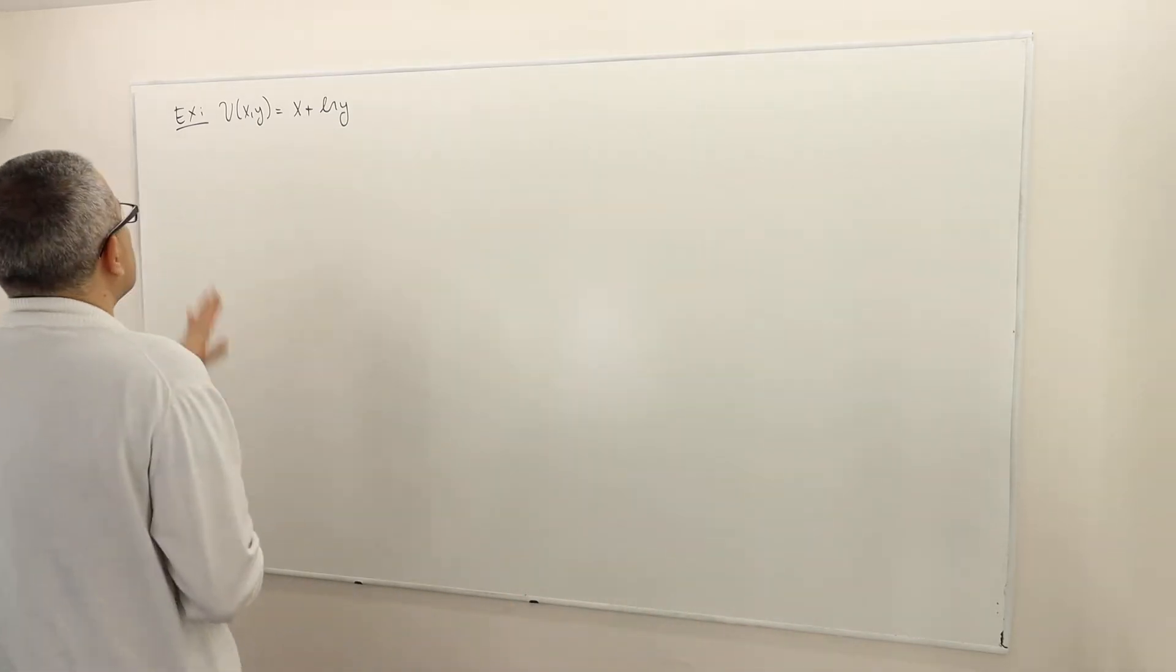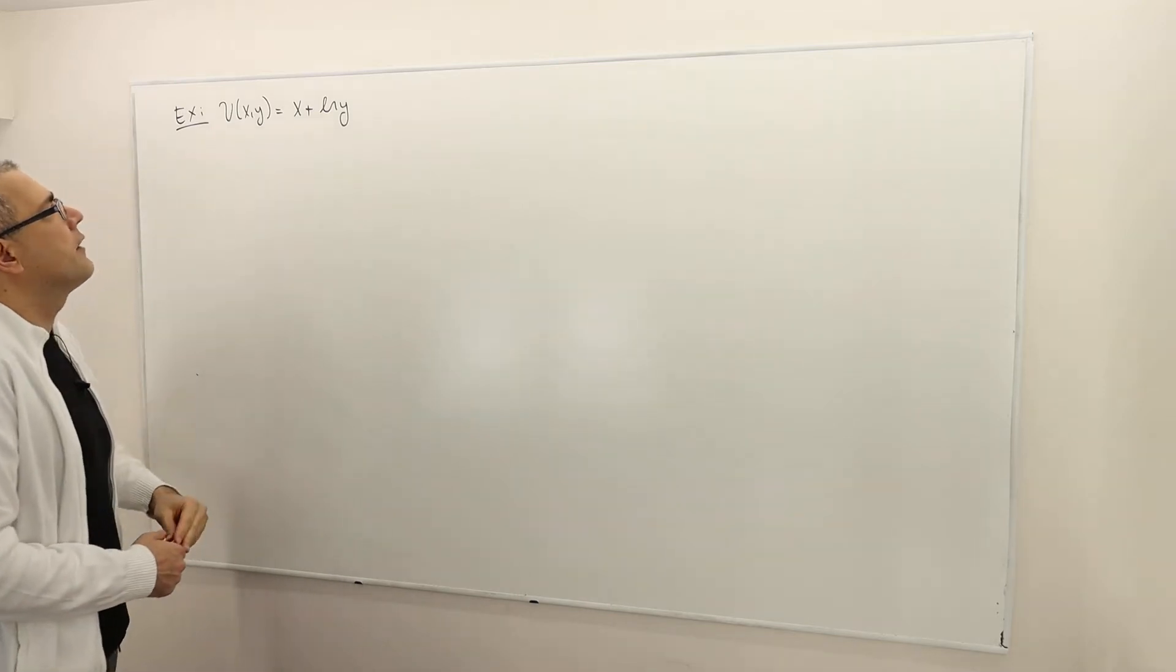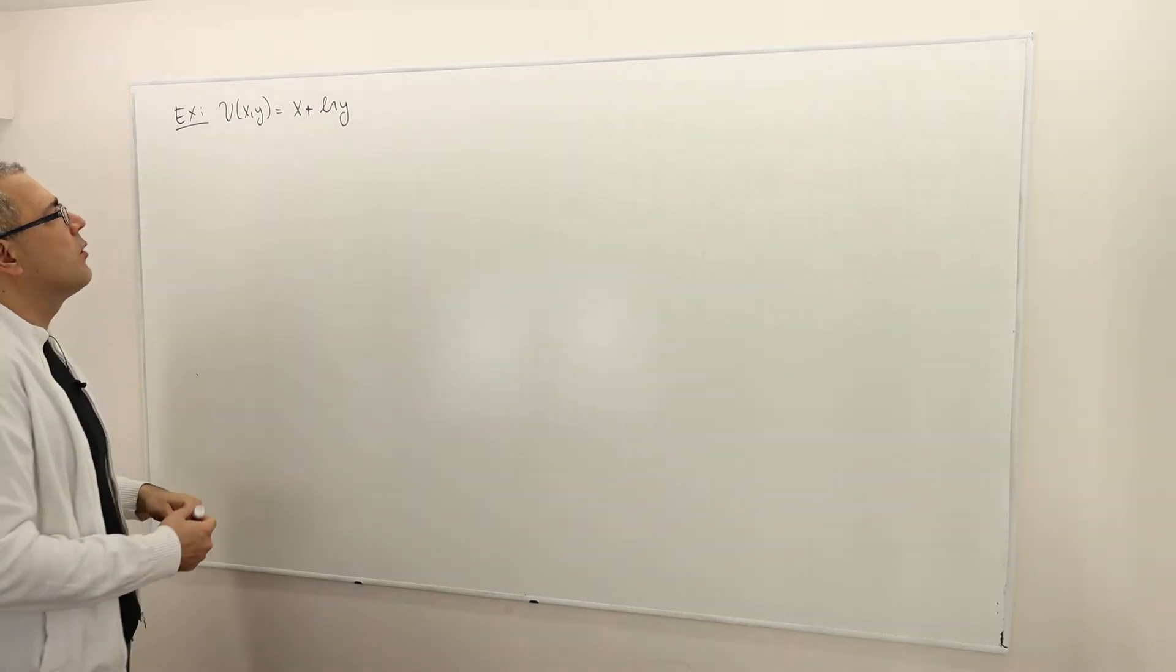In this episode I will talk about some examples and solve some maximization problems for different utility functions. So the first example we have is this utility function u(x,y) equals x plus ln y.